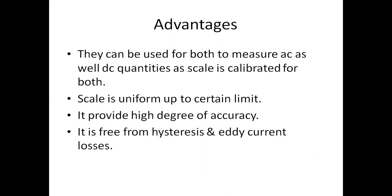The advantages of the watt meter are: it can be used to measure both AC and DC quantities, as the scale is calibrated for both. The scale is uniform up to a certain limit. It provides a high degree of accuracy and is free from hysteresis and eddy current losses. The main advantages are that it measures both AC and DC quantities with high accuracy and has a uniform scale.